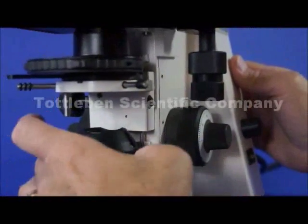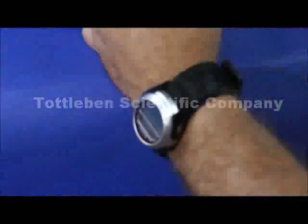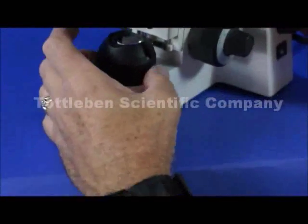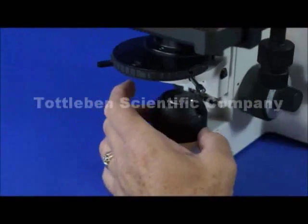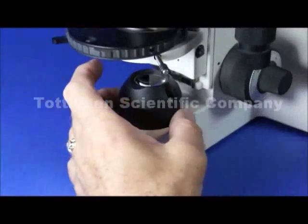Going straight down you have a field port which has a built in diaphragm for centering the condenser and aligning the light path through the condenser which is called Kohler illumination.